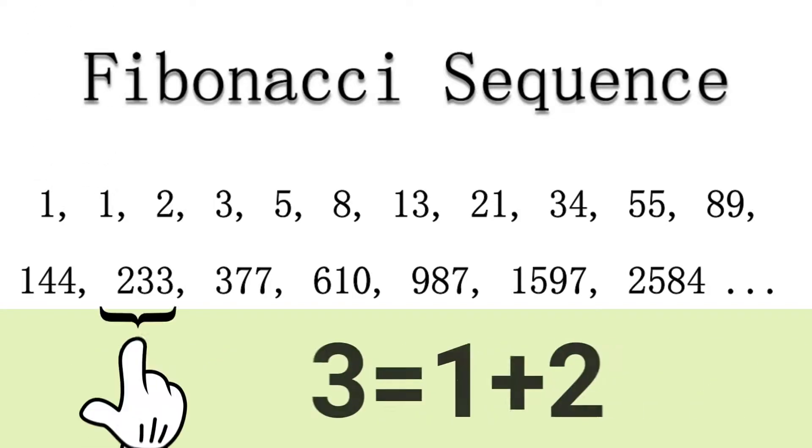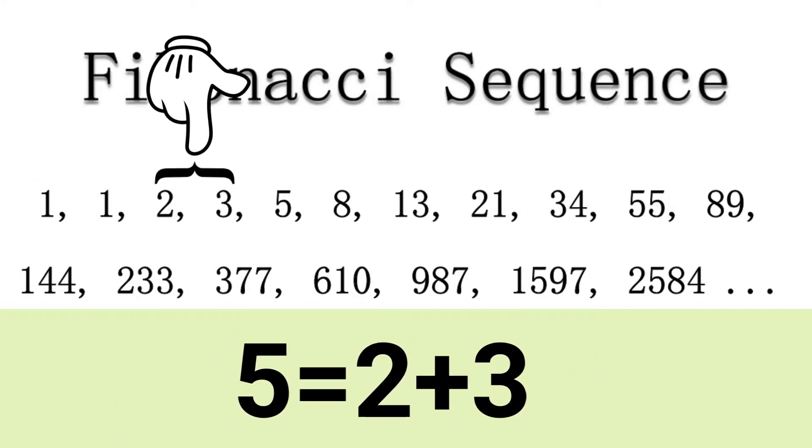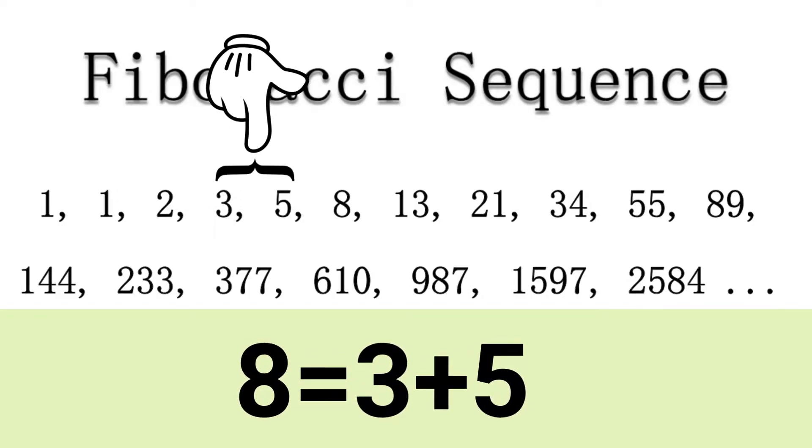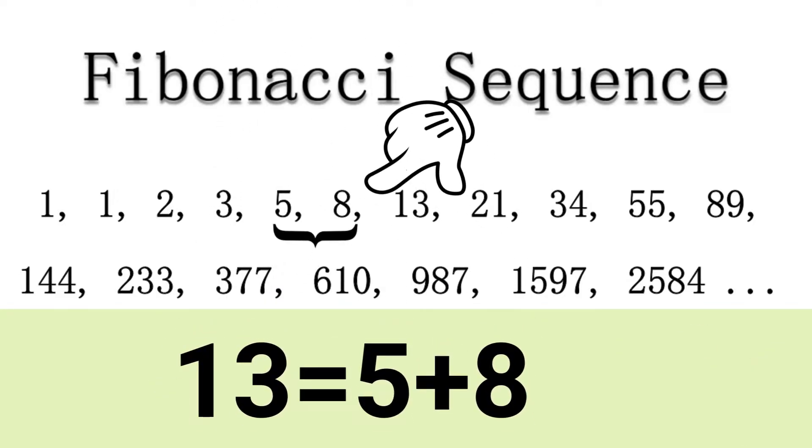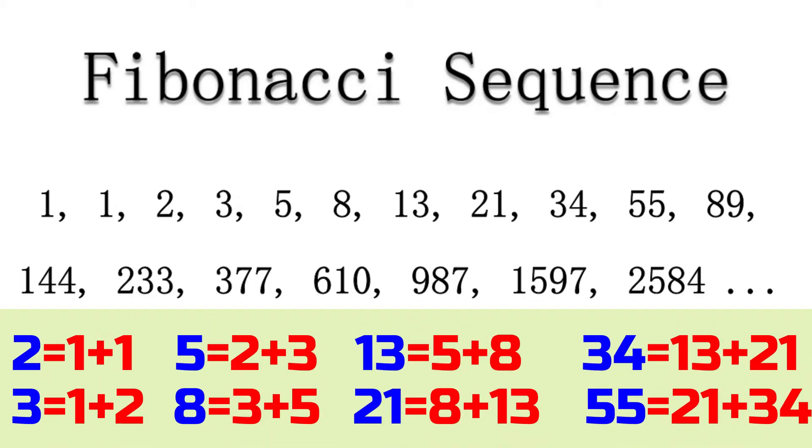If we look at this number two here, we see that this number two is one plus one - it's the sum of the preceding two numbers. Also, the number three is one plus two, the number five is two plus three, the number eight is three plus five. Thirteen is five plus eight, and so on. So every number then is the sum of the preceding two numbers.